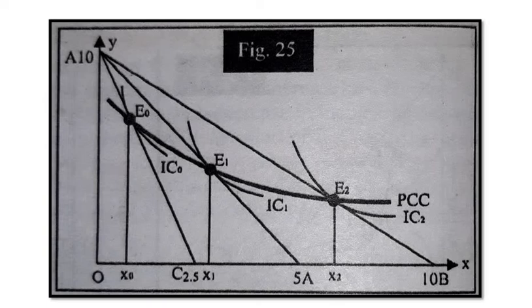Next, we assume that the price of good X rises. Hence, the changed information is income is 10, price of X is 4 and price of Y is 1. As a result, the budget line rotates leftward in the form of AC. Accordingly, the consumer is in equilibrium at E0 where AC is tangent to IC0.